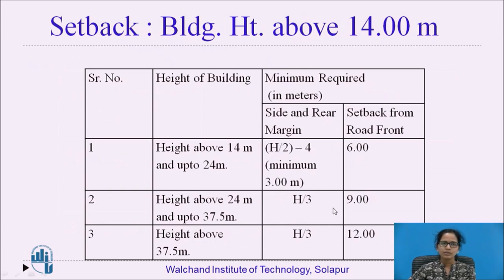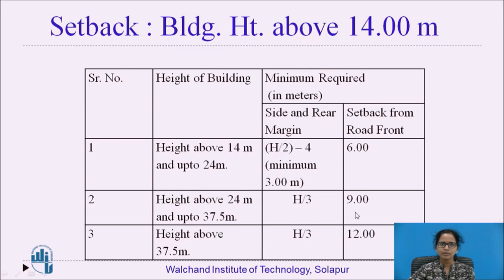Setback is the distance which will be left around the building. For a building height above 14 meters and up to 24 meters, the side margin to be left is h/2 minus 4, with a minimum of 3 meters, and the setback from the road front will be 6 meters. If the height is above 24 meters and up to 37.5 meters, the side and rear margin will be h/3 and the setback from the road will be 9 meters. For a height above 37.5 meters, the side margin will be h/3 and the setback will be 12 meters.